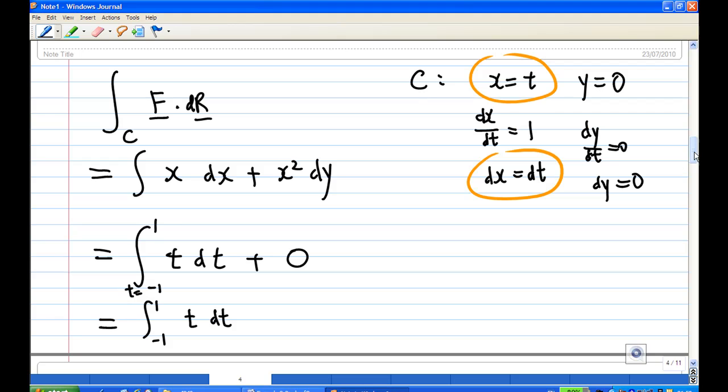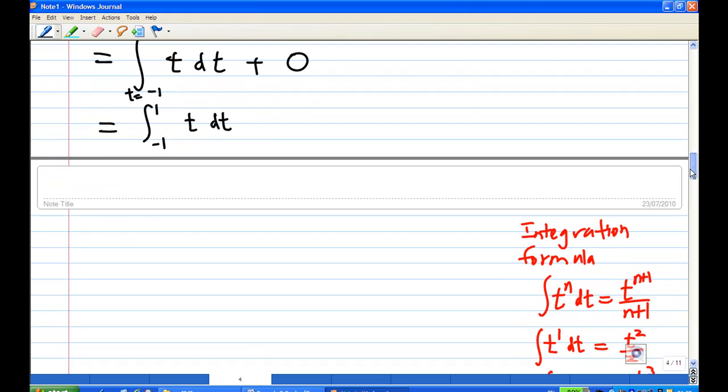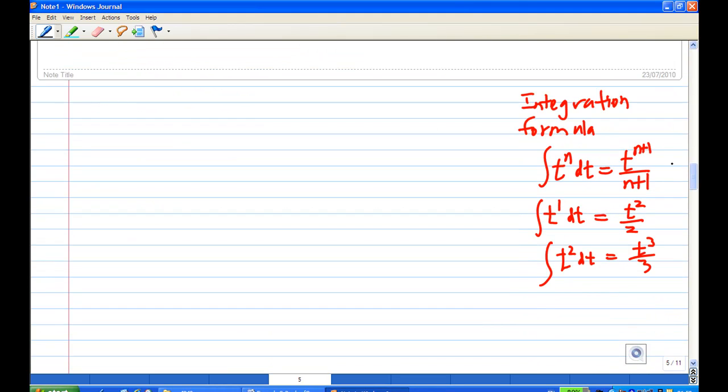So how to integrate t now? So integration of t in this case, you can recall the formula. Integrate t power n is t power n plus 1 over n plus 1. So integration of t will be t power 2 over 2 at t equal to -1 to 1. And t equal to 1, you get 1 squared over 2. And t equal to -1, you get -1 squared over 2. And then you subtract. And you find that both of them are half minus half, which is 0.